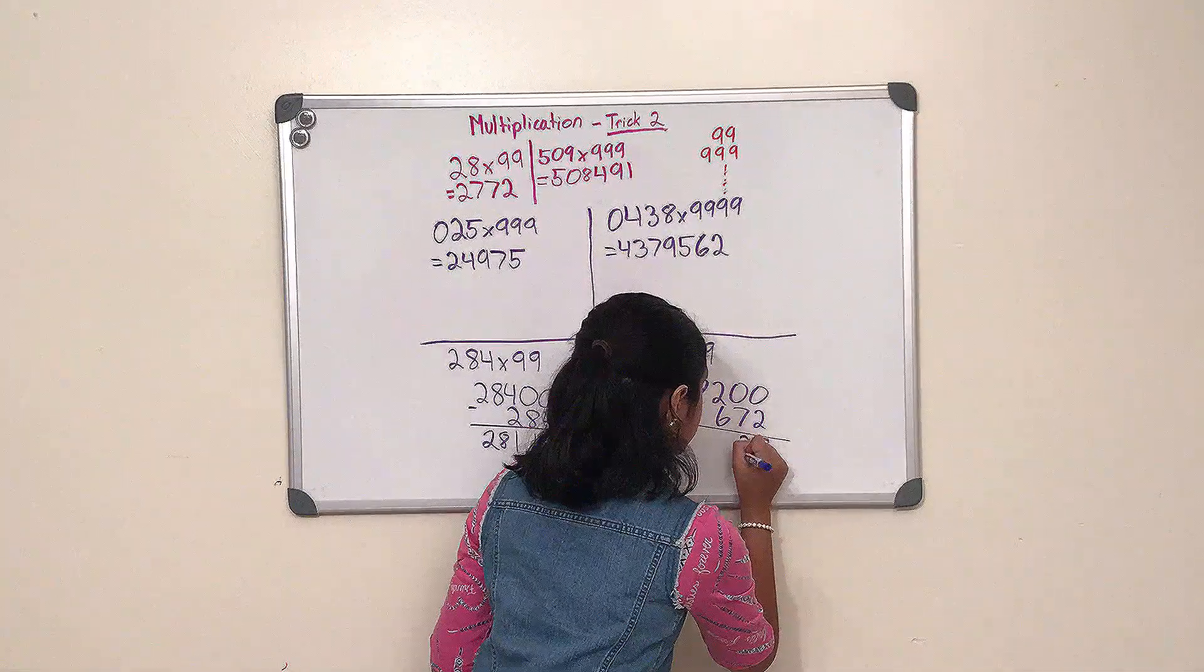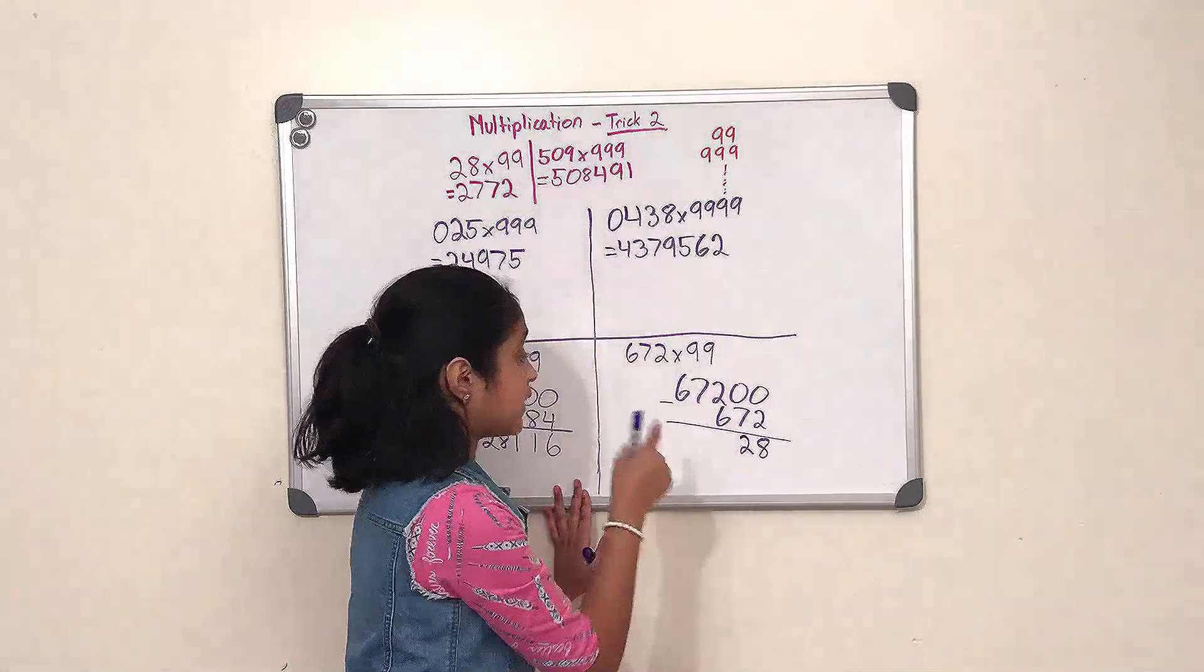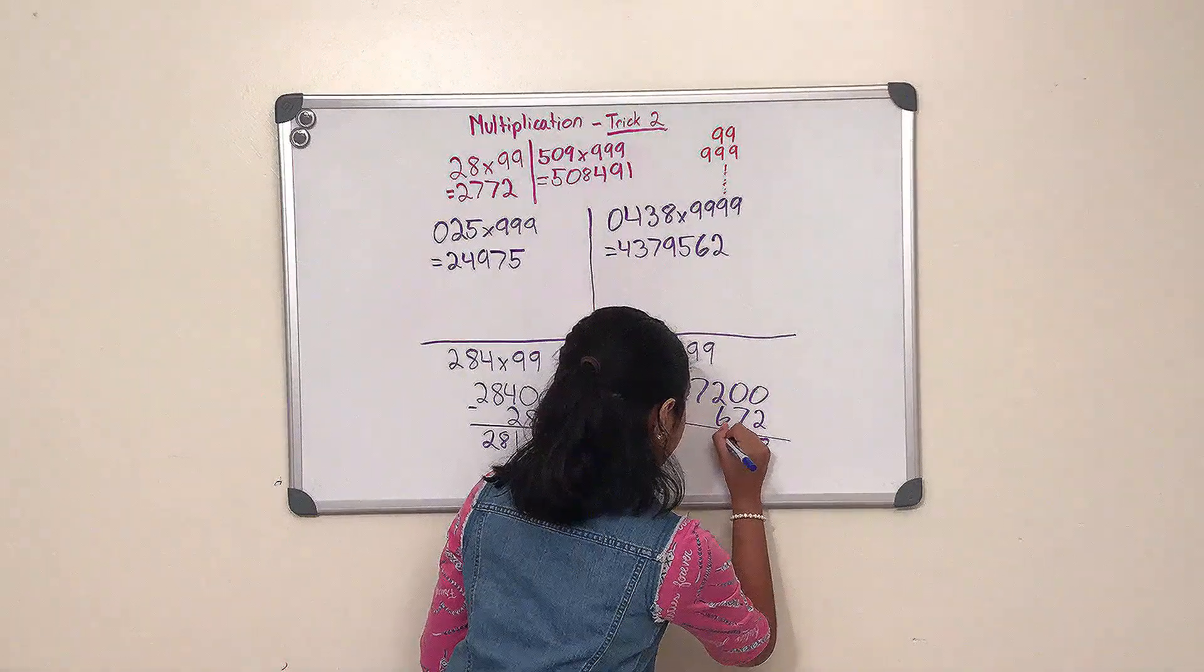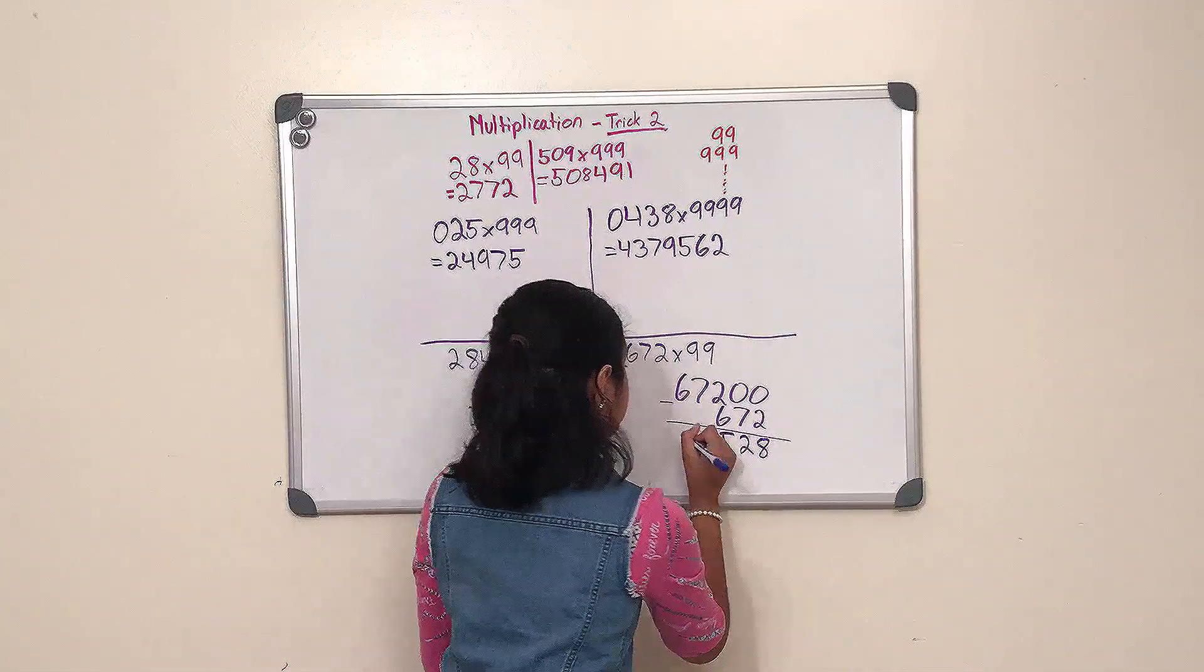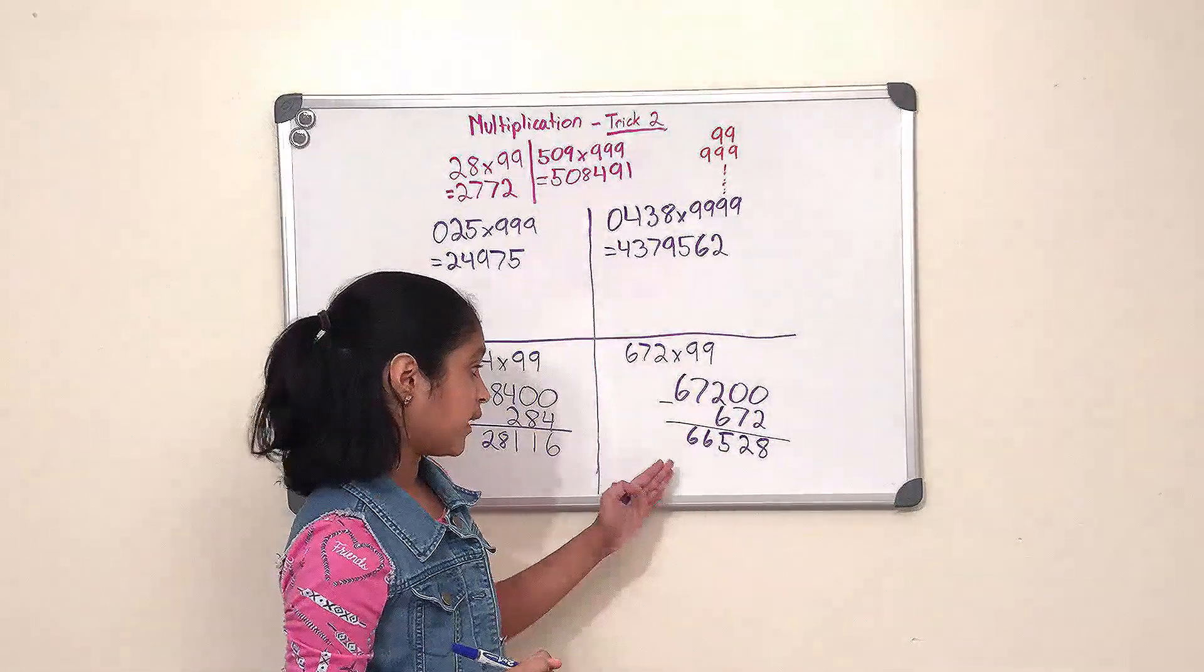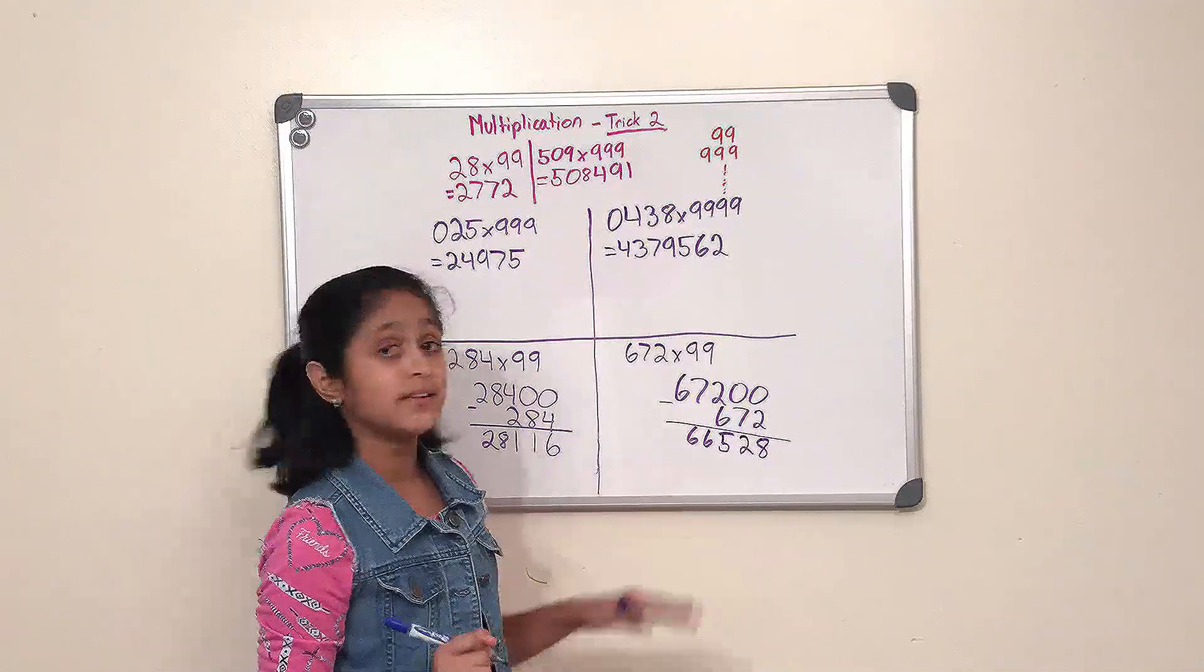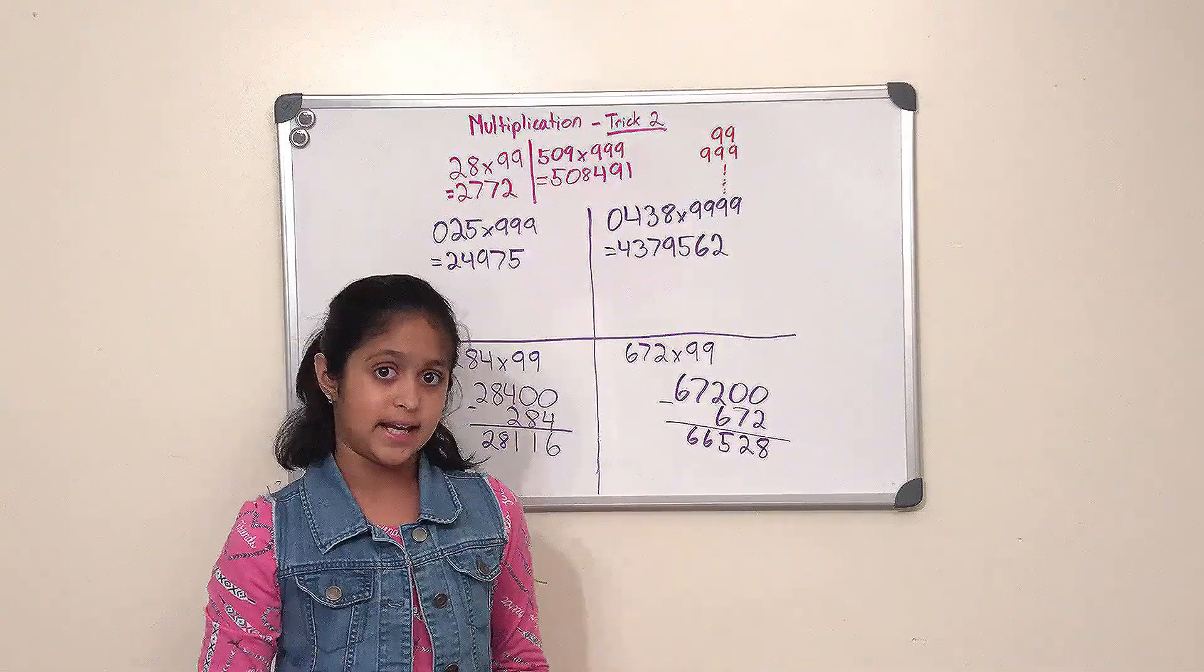And 6 minus 0, which is 6, and 6 minus 0, which is 6. And this is our product, and it is 66,528.